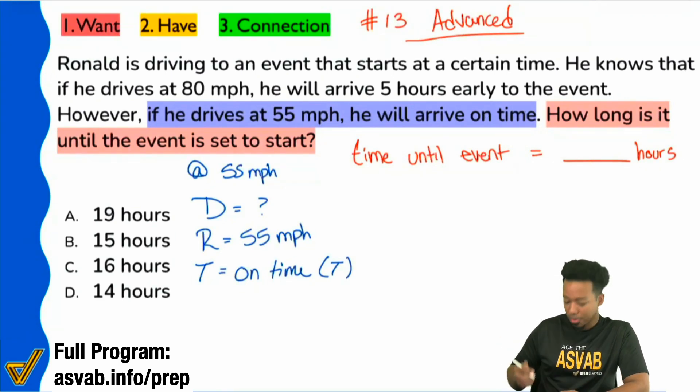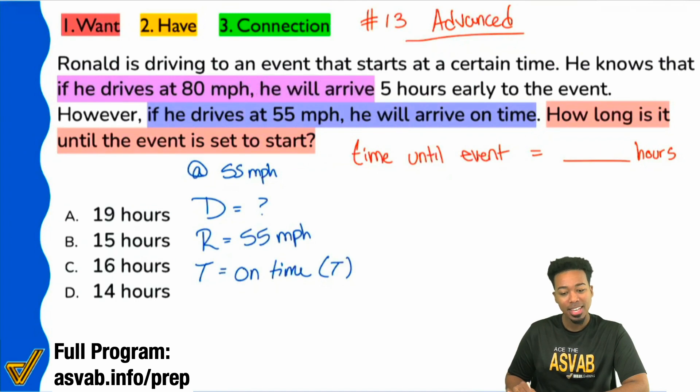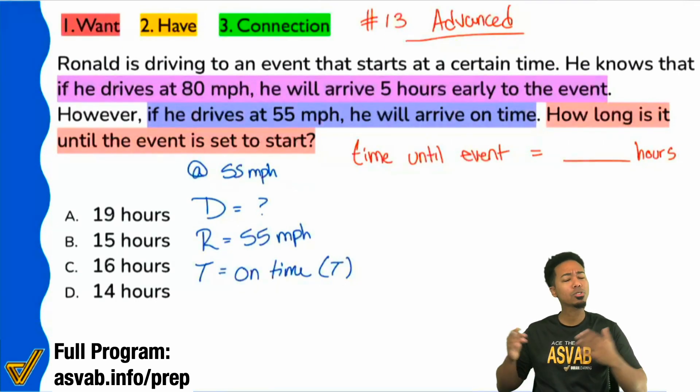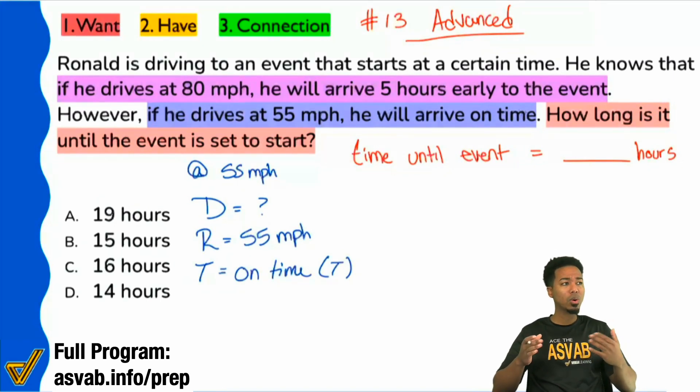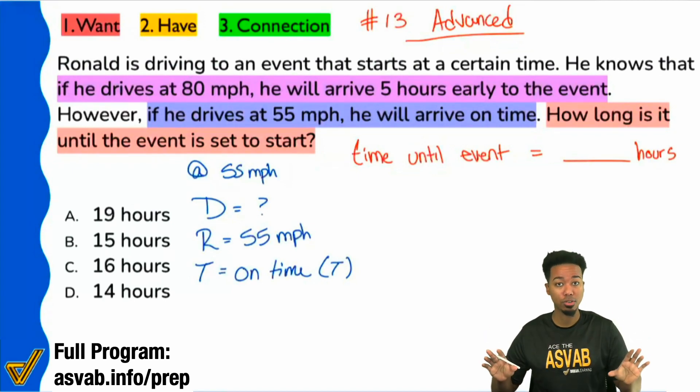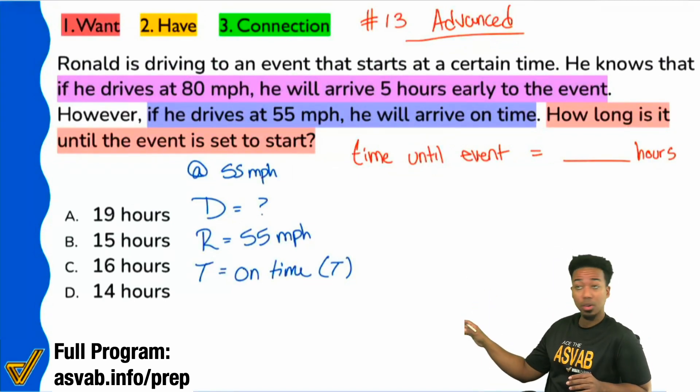Now, on the other hand, watch how this really comes together. This is really cool. Because you see that on the first case here, he says if he drives at 80 miles an hour, he's going to arrive five hours early to the event. So the biggest question before we continue could be, well, how do we represent that? How am I supposed to write that out? Well, remember, we have two different scenarios here. The last scenario that we wrote down over here, 55 miles an hour, that's the rate. T can just be T, that's on time. We don't know the distance though.